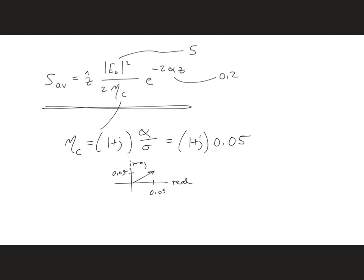Then we can figure out the angle. The angle is 45 degrees, and we can figure out the hypotenuse there. So we get 0.0707e to the j 45 degrees.